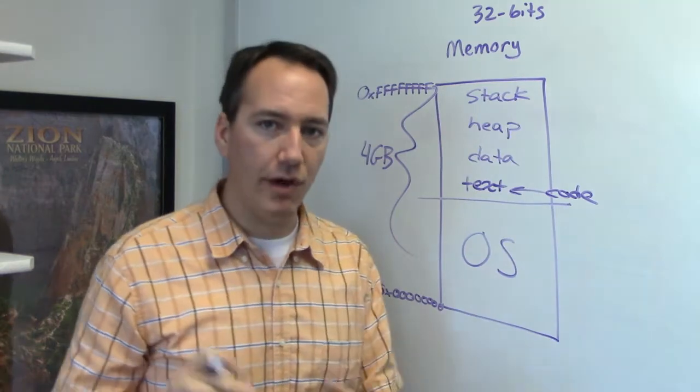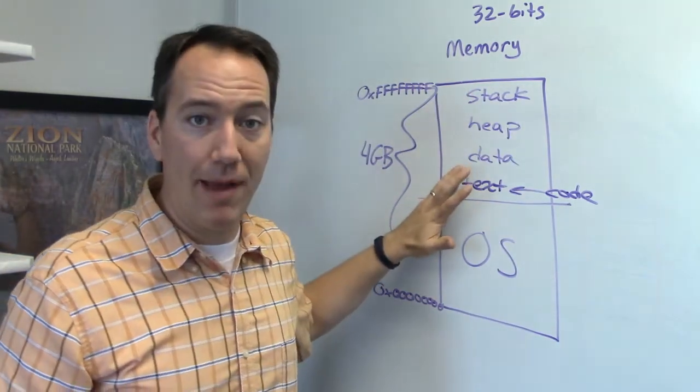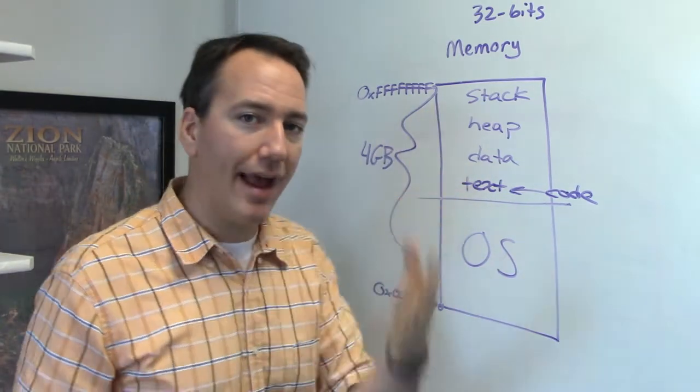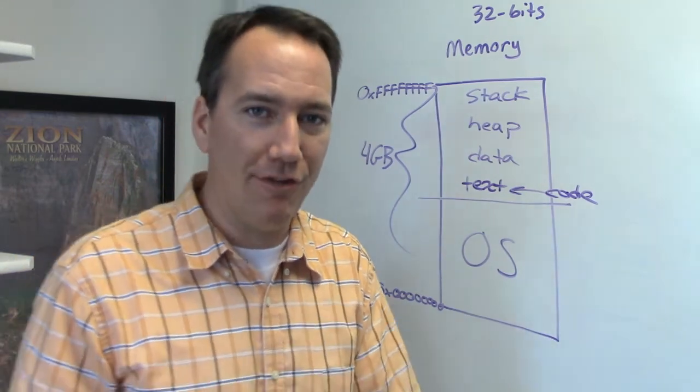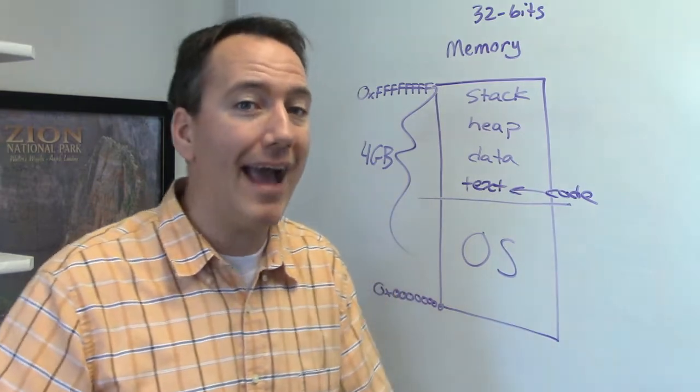Now you don't need to worry too much about this terminology. What I mainly want you to see is that memory is organized based on different types of data. And last week I asked you the question on the quiz, how does the CPU tell the difference between memory used for code and memory used for data? And the answer was it really can't tell the difference.